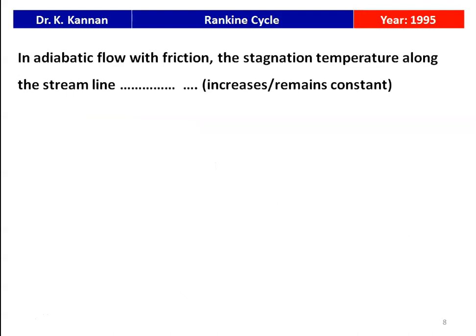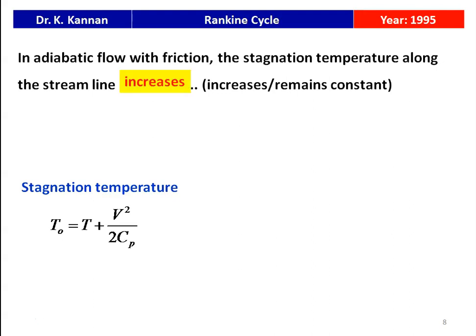The next question from the 1995 question paper: in adiabatic flow with friction, the stagnation temperature along the streamline — increases or remains constant? Stagnation temperature equals static temperature T plus V²/2Cp. When there is friction, the static temperature at the outlet increases and velocity marginally decreases. The cumulative effect is that the stagnation temperature will increase. So the answer is: increases.